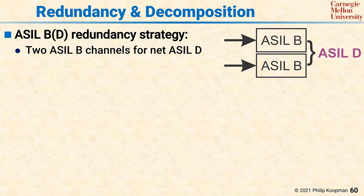It's important to remember that ASILs are not assigned to computational devices, but rather are assigned to safety requirements. The claim being made with ASIL B of D is that the safety requirements are at ASIL D, but they are decomposed to two independent ASIL B sets of requirements, with each of those sets of ASIL B requirements being allocated to an independent computational channel.